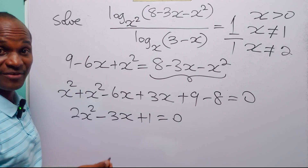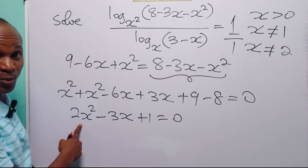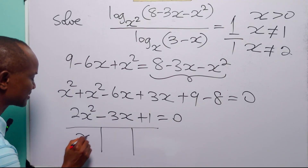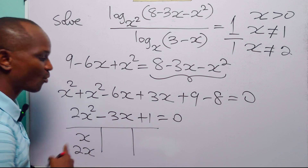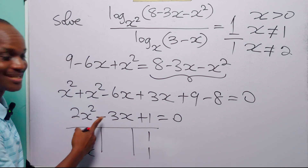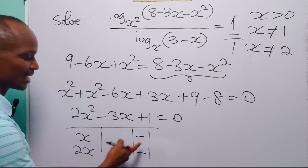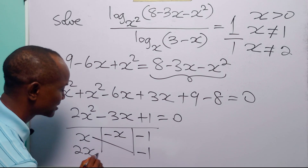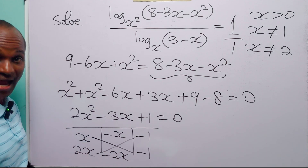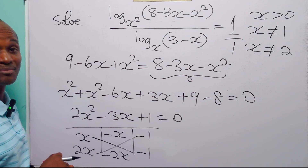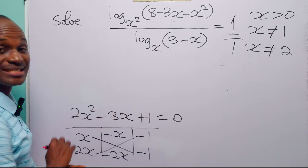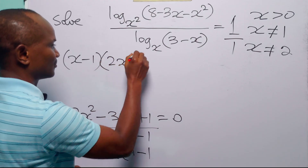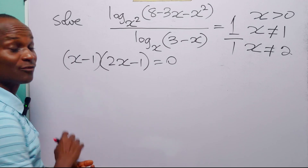We solve this quadratic by factorization. Since the coefficient of x² is not equal to 1, we use the table method. The factors of 2x² are x and 2x, and the factors of +1 with a negative middle term are (minus 1) and (minus 1). Multiplying cross-wise gives minus x and minus 2x, and minus 2x minus x gives minus 3x, which matches. So the left-hand side factors as (x minus 1)(2x minus 1).